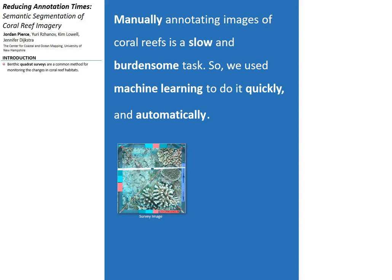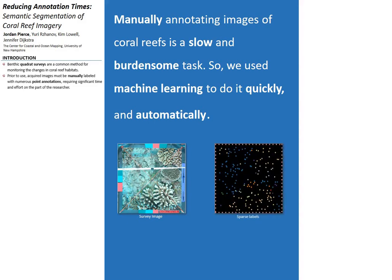Benthic habitat quadrat surveys are a common method of monitoring the changes that occur in coral reefs. An example of such a survey image can be seen below. However, before any of these images can be used in spatial analyses, they must be provided with annotations.